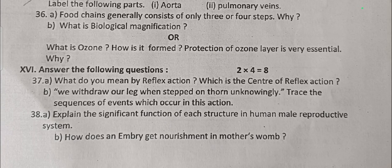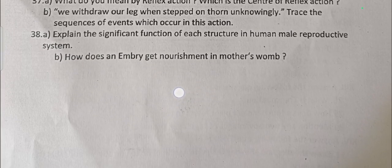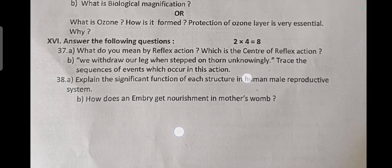What is biological magnification? Or: what is ozone and how is it formed? Why is protection of the ozone layer essential? Four-mark questions: What do you mean by reflex action? Which is the centre of reflex action? We withdraw our leg when stepped on a thorn unknowingly — trace the sequence of events. Next: explain the significant functions of each structure in the human male reproductive system. How does the embryo get nourishment in the mother's womb?